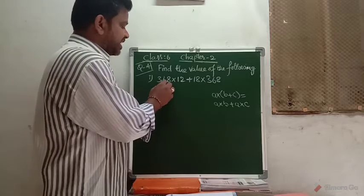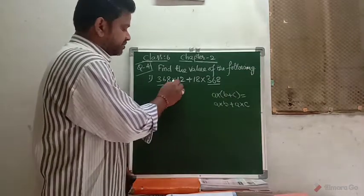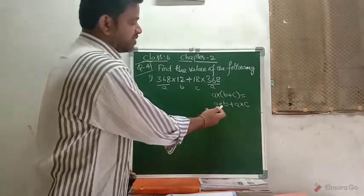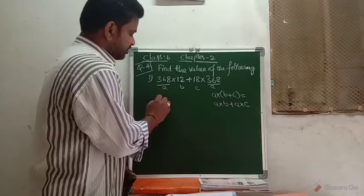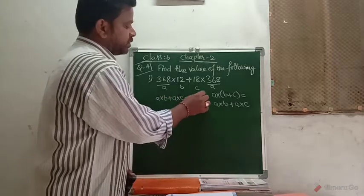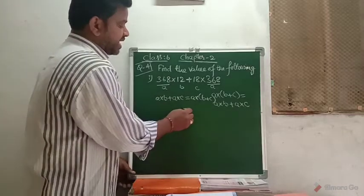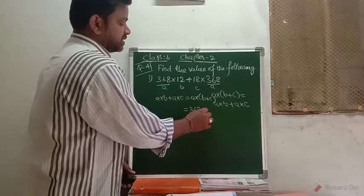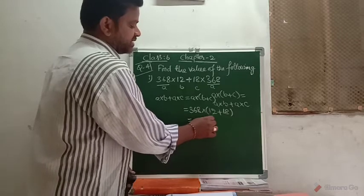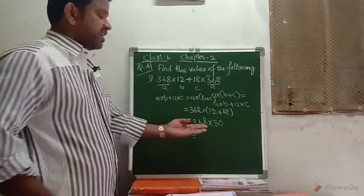Now, 368 appears two times in this question. So we assume 368 is A, and B and C are the other values. This can be written in the form of A into B plus A into C, which equals A into B plus C. So we write 368 into 12 plus 18, which equals 368 into 30.